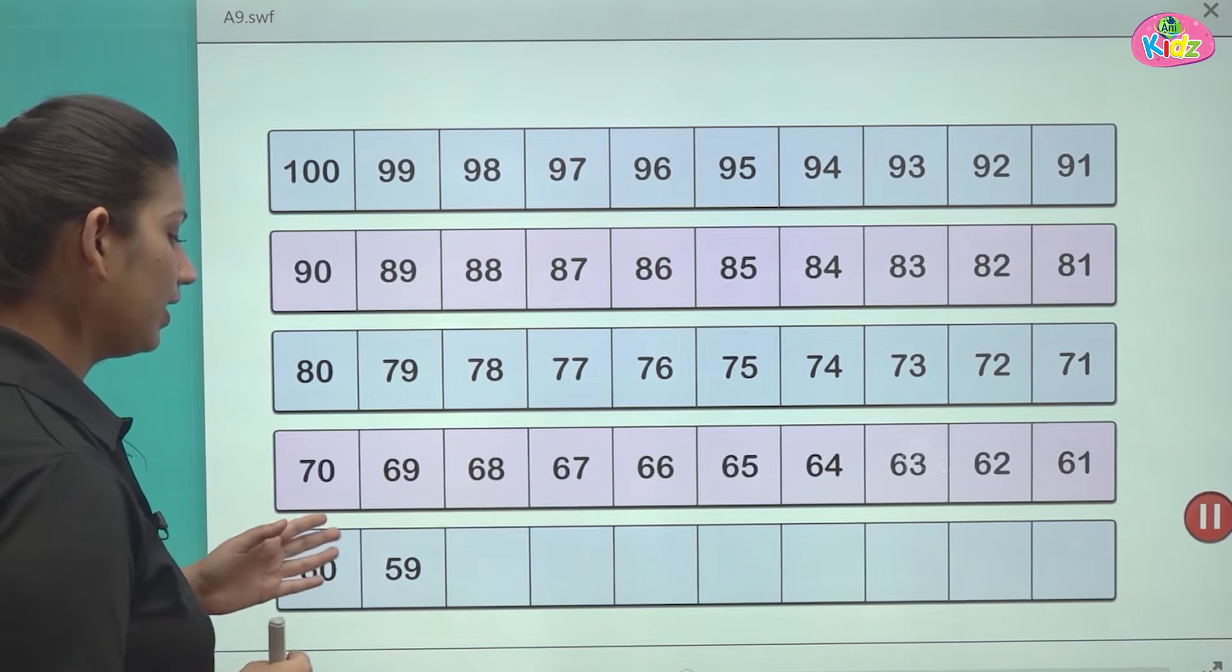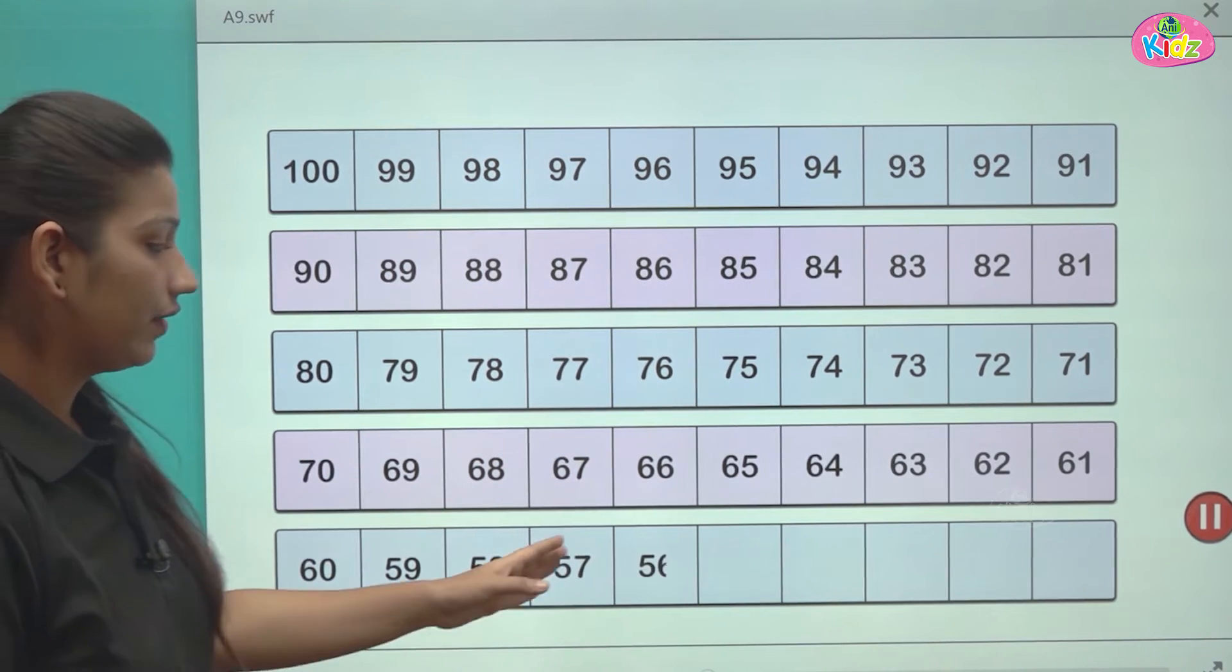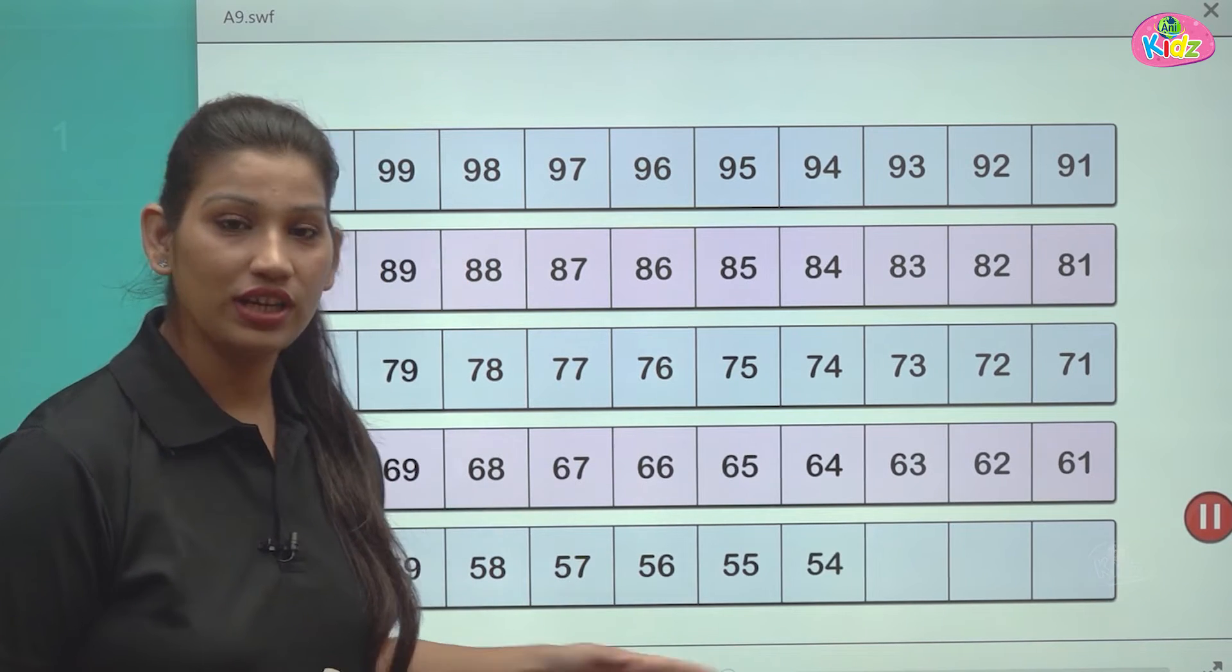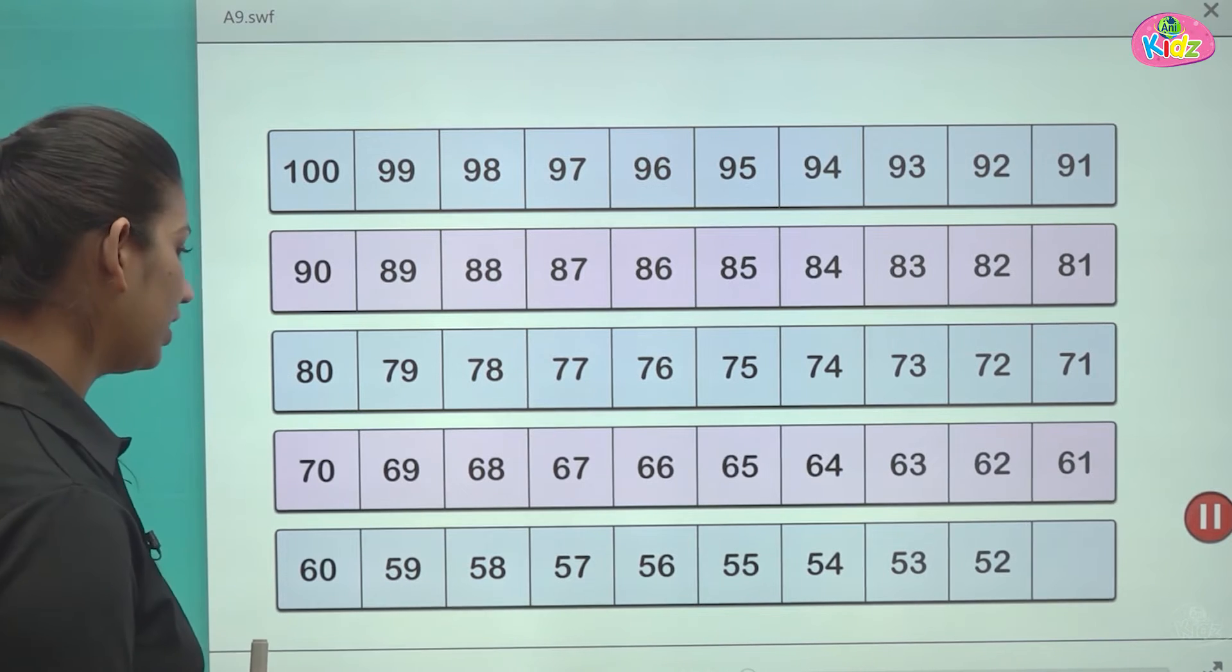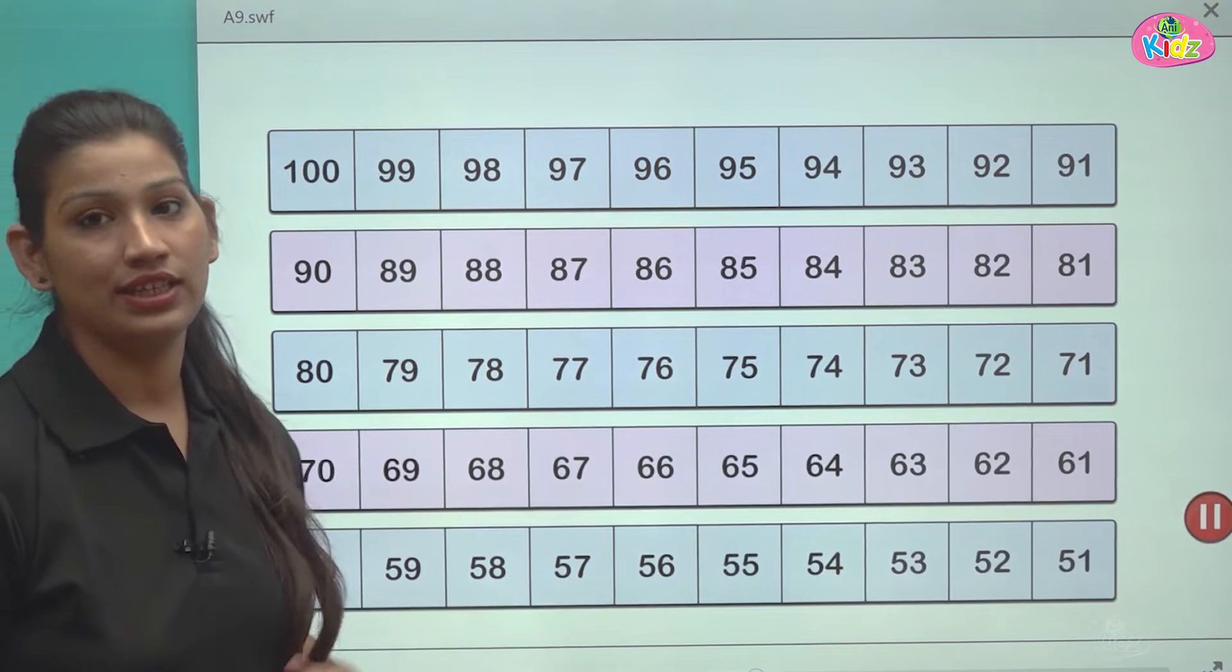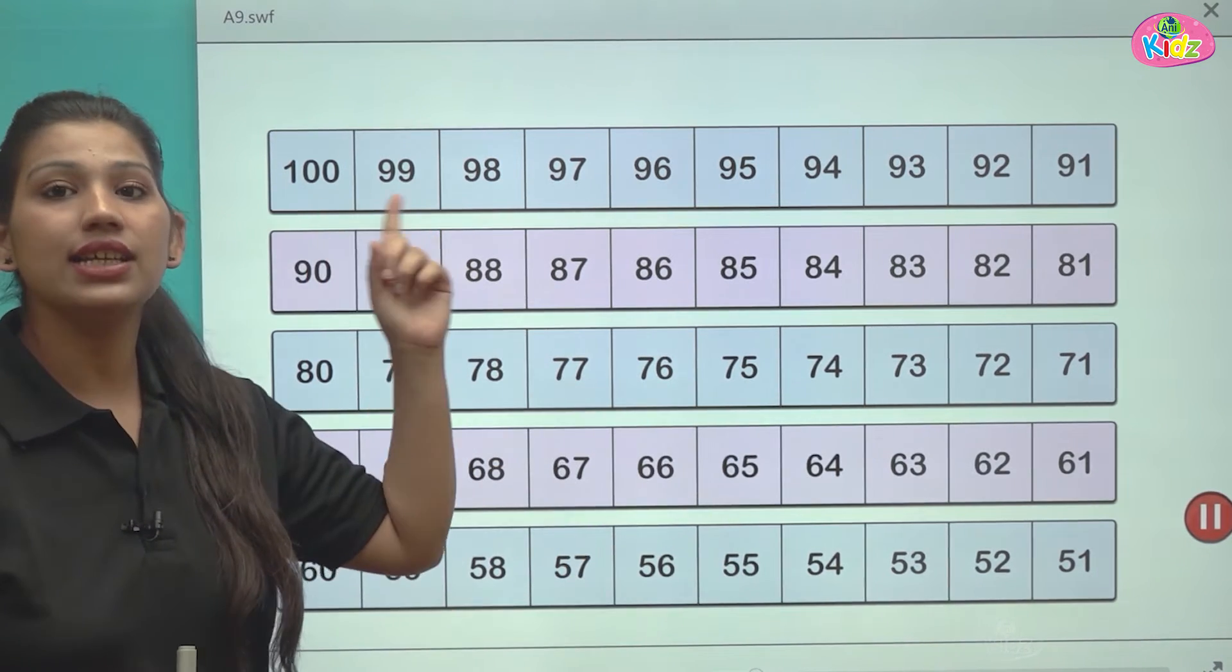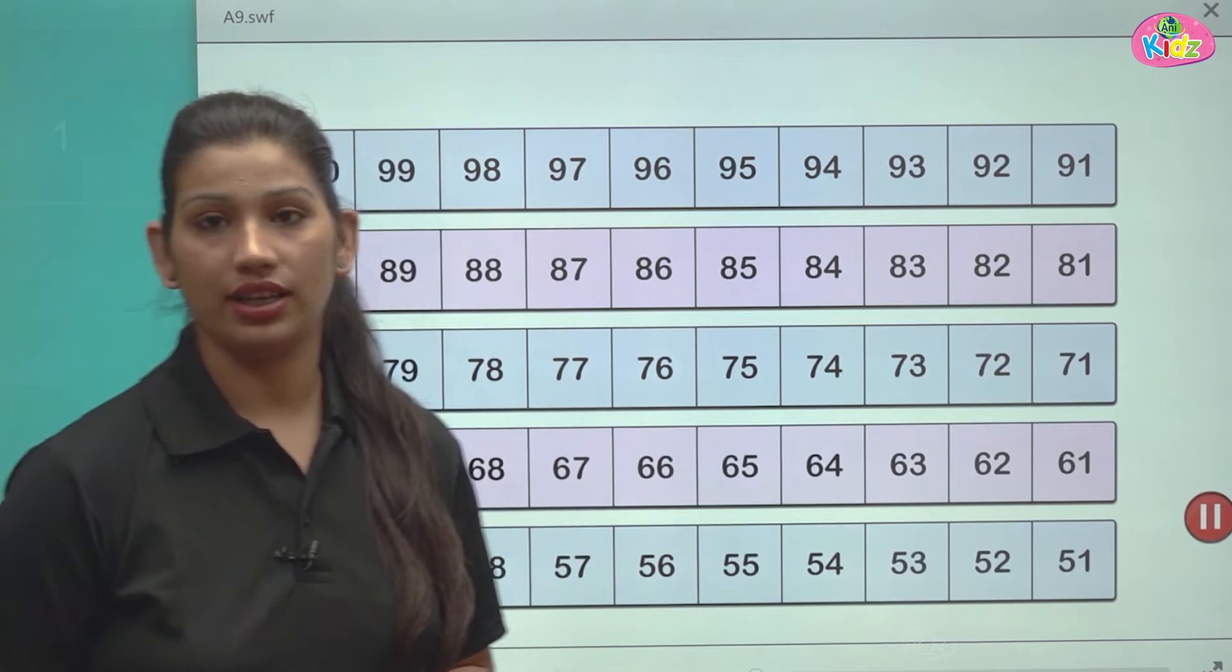And the last series of 60 is 60, 59, 58, 57, 56, 55, 54, 53, 52 and 51 till number 51. You can see here is the back counting of number 100 to 51. 100 is the biggest number here. 51 is the smallest number here.